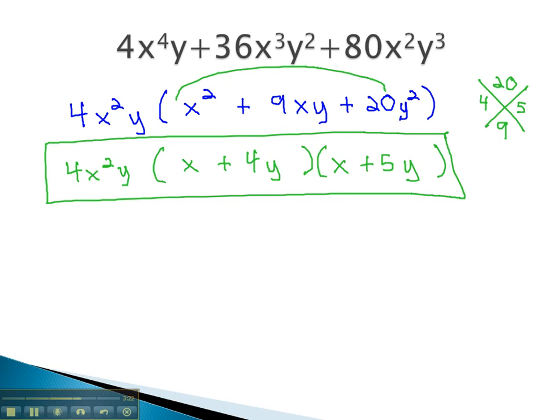And that will give us our final factors, 4x squared y times x plus 4y times x plus 5y.